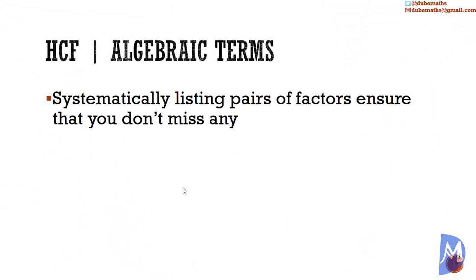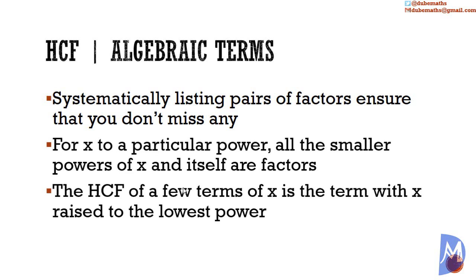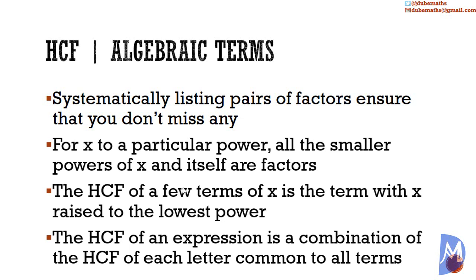So the HCF of 3x squared y cubed z to the 4th power and 9x z to the 3rd power is 3x z to the 3rd power. To summarize: systematically listing pairs of factors ensures that you don't miss any. For a variable to a particular power, all the smaller powers of x and itself are factors. The HCF of a few terms of x is a term of x raised to the lowest power. And the HCF of an expression is a combination of the HCF of each letter common to all terms.